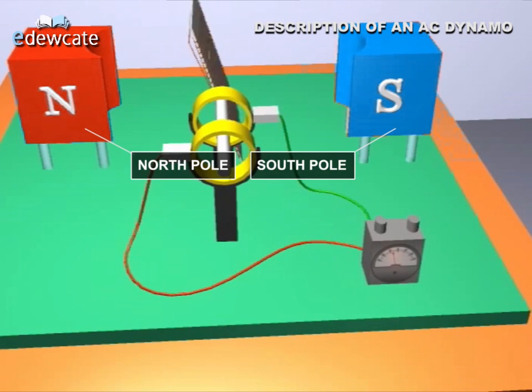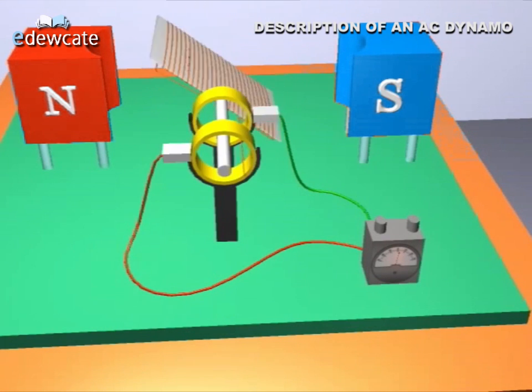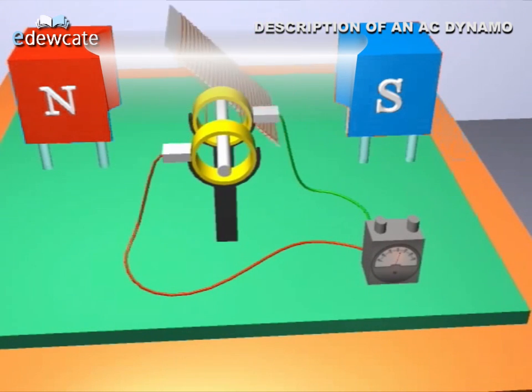N and S represent the north and south pole of the permanent horseshoe magnet. It provides a stationary magnetic field.